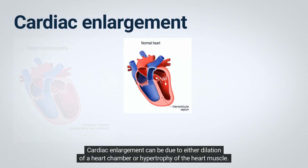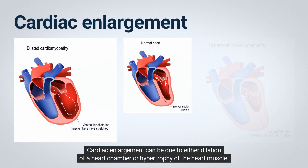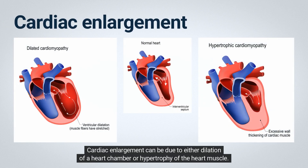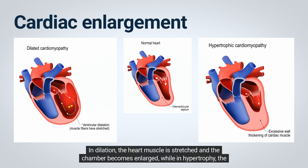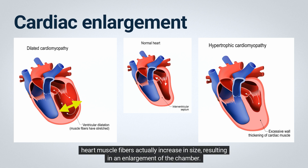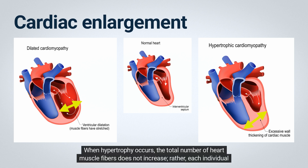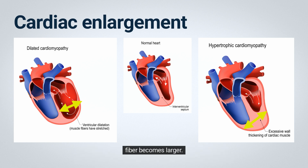Cardiac enlargement can be due to either dilation of a heart chamber or hypertrophy of the heart muscle. In dilation, the heart muscle is stretched and the chamber becomes enlarged, while in hypertrophy, the heart muscle fibers actually increase in size, resulting in an enlargement of the chamber. When hypertrophy occurs, the total number of heart muscle fibers does not increase; rather, each individual fiber becomes larger.